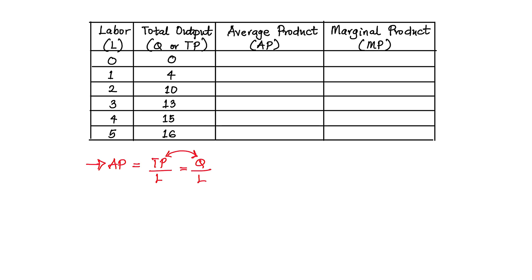For this first part, to get the average product in the first box, the total product is 0 divided by the level of labor which is 0. So 0 divided by 0 is undefined — hence, we represent it with a dash.